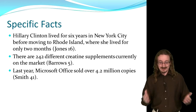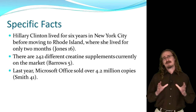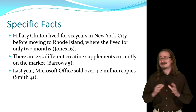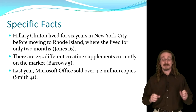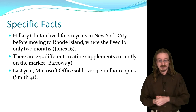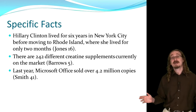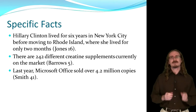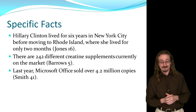So here are some examples. 'Hillary Clinton lived for six years in New York City before moving to Rhode Island, where she lived for only two months.' Here's very specific information — that two-month time span. There are very few people who follow Hillary Clinton's movements so closely that they would know something like this, so you obviously need to cite a source for that. 'There are 242 different creatine supplements currently on the market.' If I just said there are many different creatine supplements, I wouldn't need to cite that — that would be common knowledge. But giving the specific number 242 means I got it from somewhere.